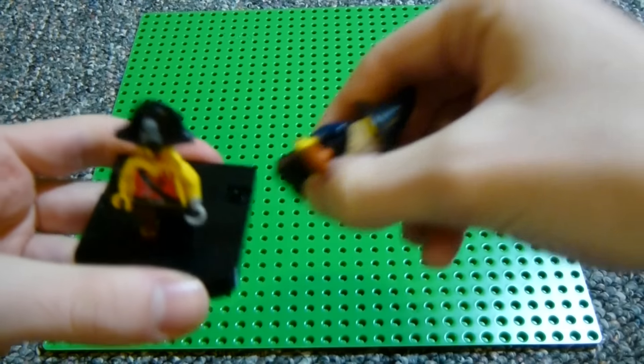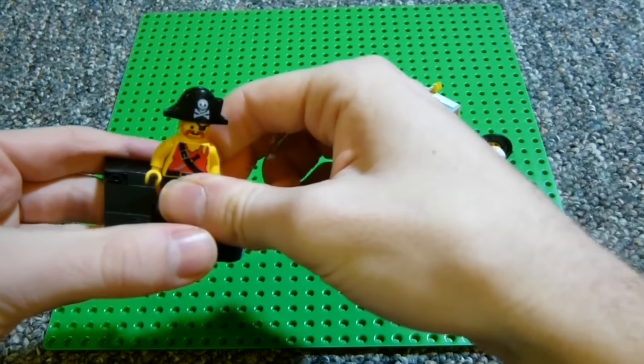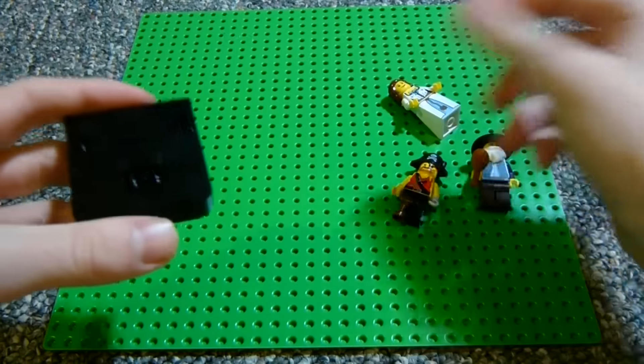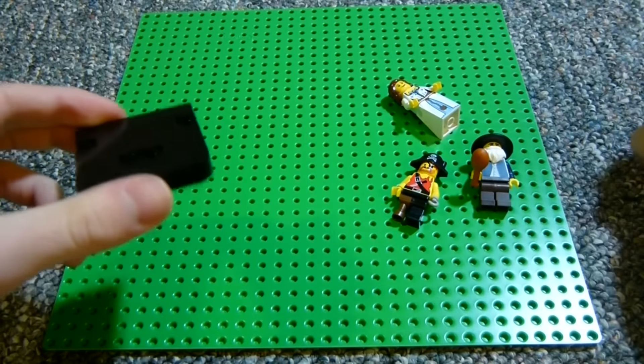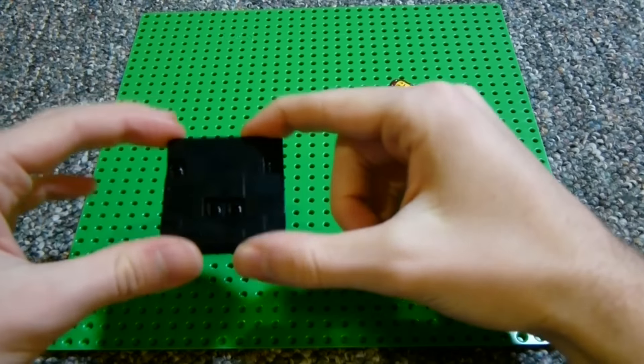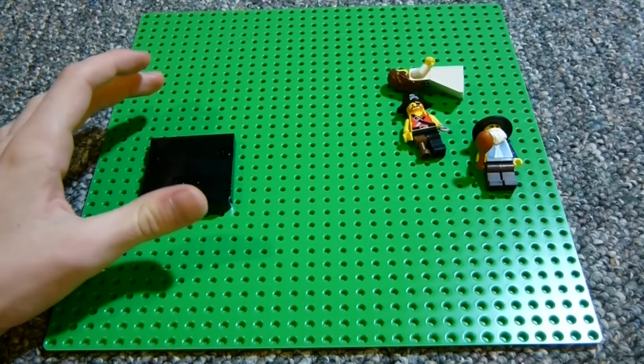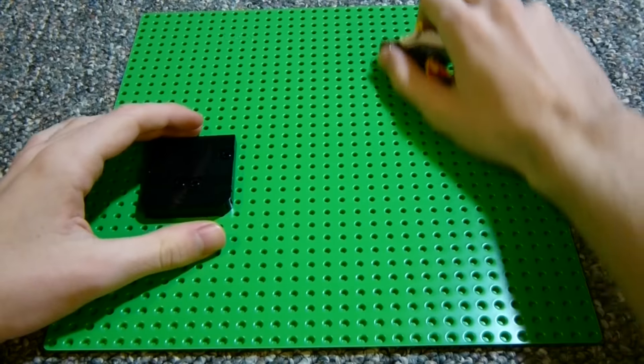And so what's very clever about this is that you can store a minifigure in front here. And then when you build more of these, you can keep them attached together with other minifigures. So if you have N of these little bases, you can store 2N-1 minifigures. That means if you have 5 of them, you can store 9. If you have 20 of them, you can store 39 minifigures. Quite a few.